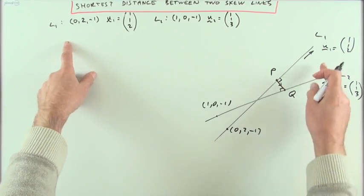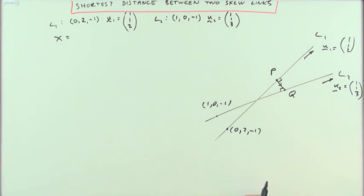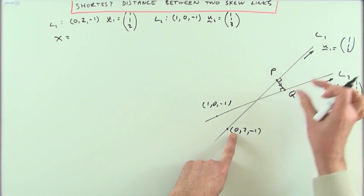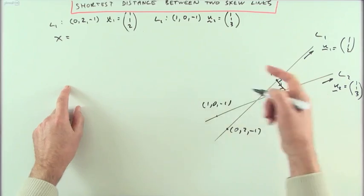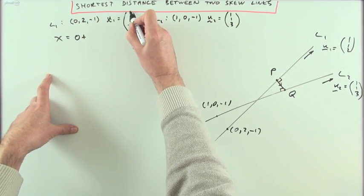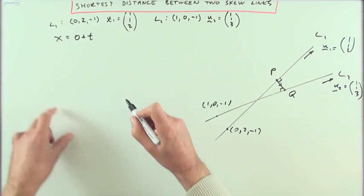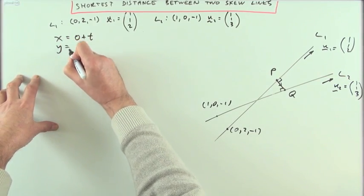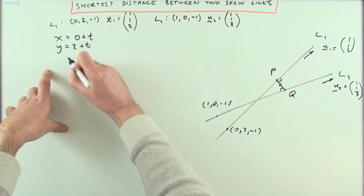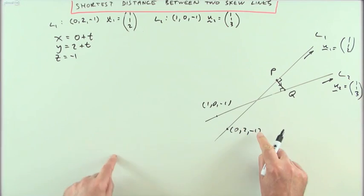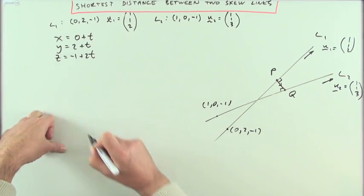Any point on line one will have coordinates found using the basic definition of a line: start at the given point and take steps of the direction vector using a parameter T. So the x-coordinate of any point is 0 plus T, the y-coordinate is 2 plus T, and the z-coordinate is -1 plus 2T.